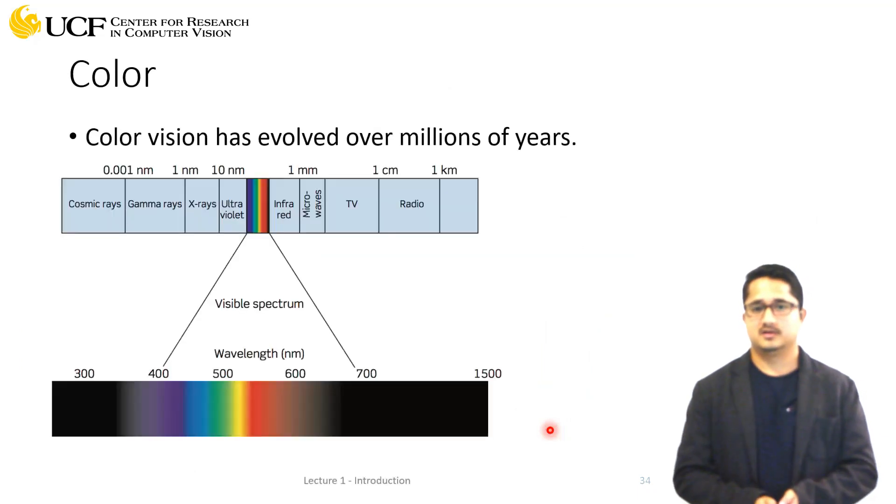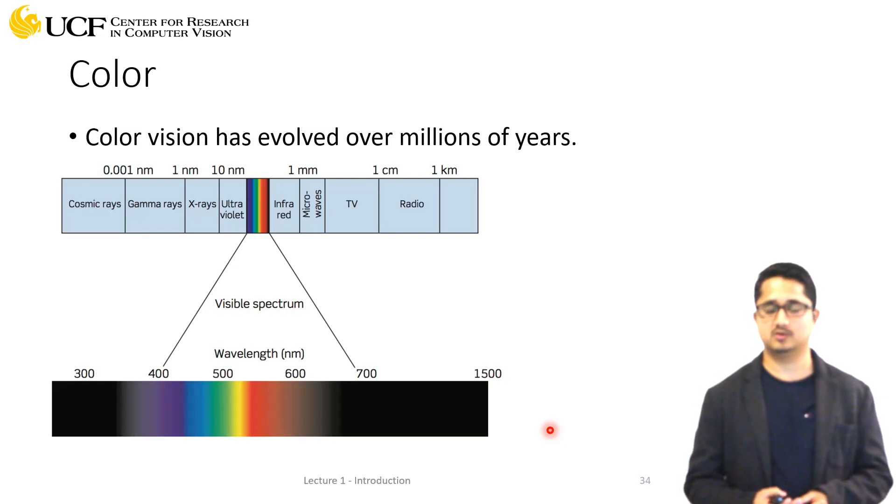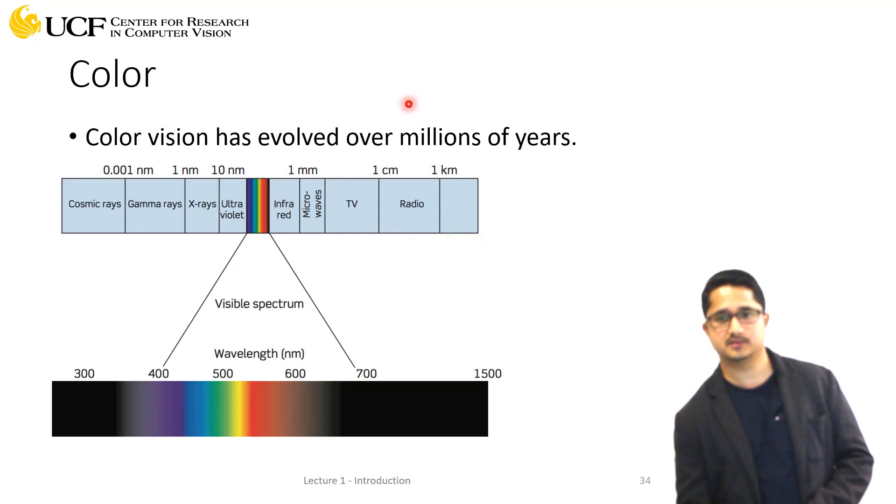Color is a biological thing—it's been evolving over so many millions of years. Looking at the complete wavelength band of light...